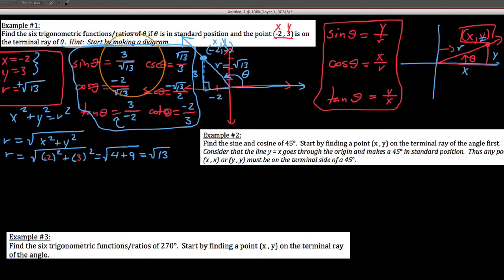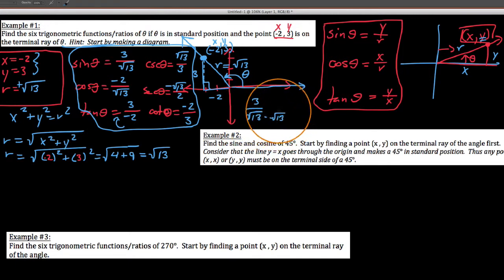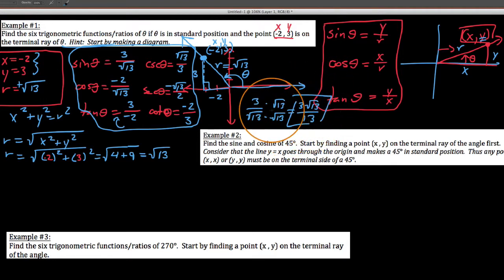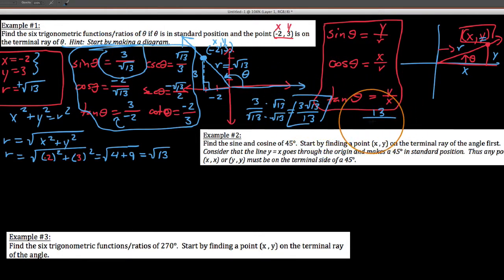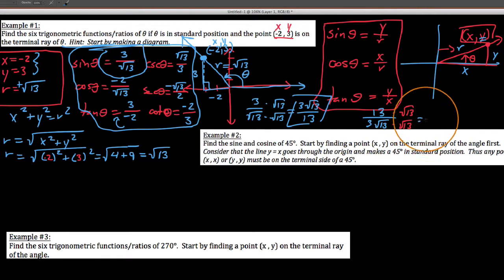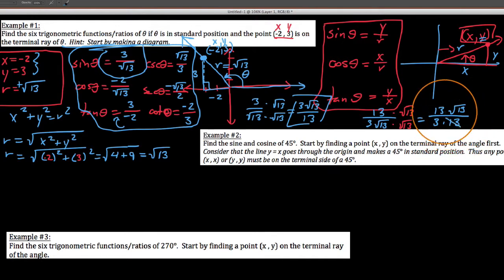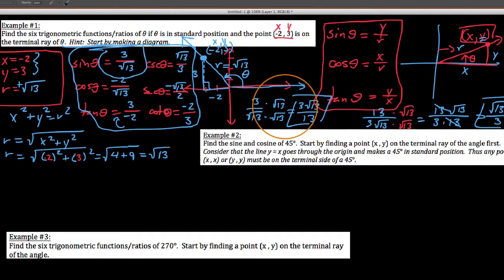These are all reciprocals of one another and that's all I was looking for. One thing I want to mention: if you're left with 3 over root 13, which by all rights we should rationalize, you would get instead 3 root 13 over 13. So technically this is our sine value we should be listing. The reason I told you not to rationalize up front is that if you try to flip this, you'd get 13 over 3 root 13, and when you rationalize you end up back at root 13 over 3 — which is what you started with. So rationalize when you're all done reciprocating.